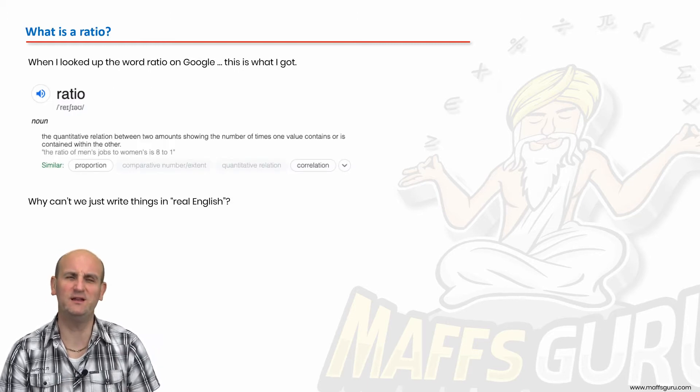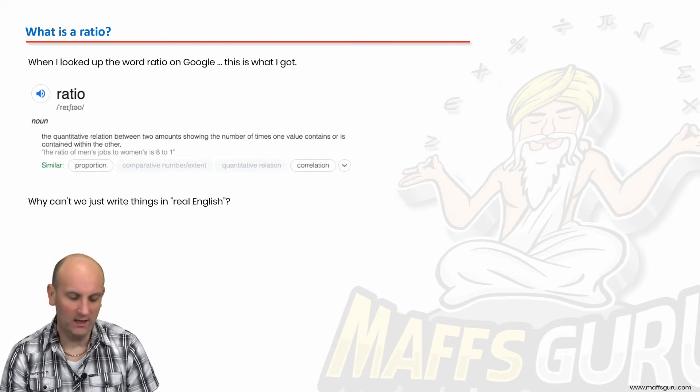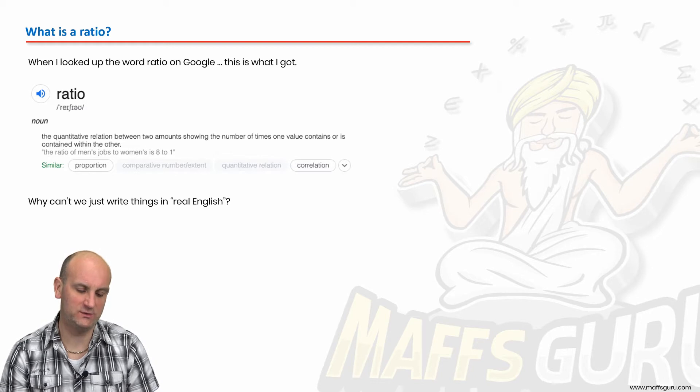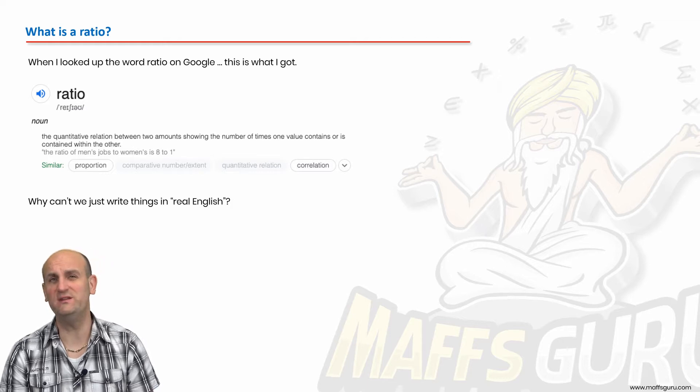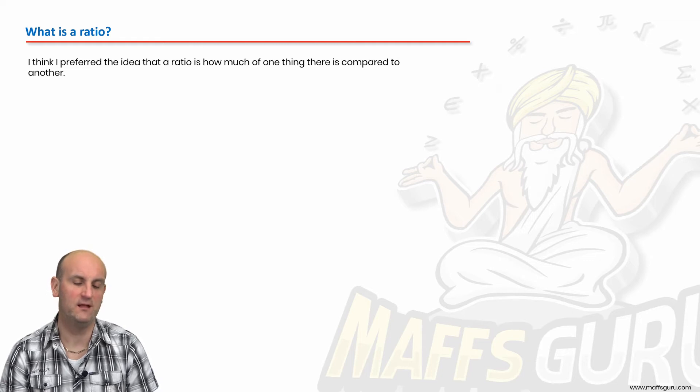What is a ratio? Now I looked it up on Google. A ratio is a noun. The quantitative relation between two amounts showing the number of times one value contains or is contained within the other. Sometimes the dictionary doesn't help, does it really? So I wonder why we can't just write things in real English. Basically I did another Google search and came up with the idea that ratio is how much of one thing there is in comparison to another.